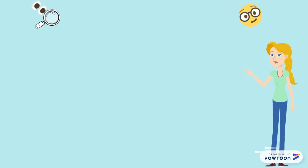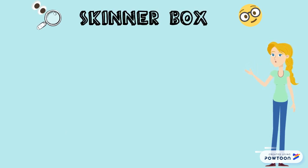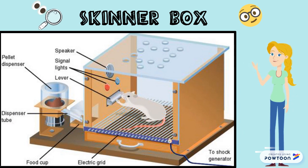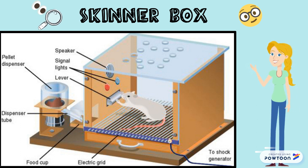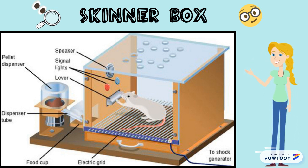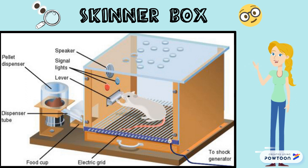BF Skinner presented operant conditioning by carrying out several experiments on animals. He used the Skinner box, created by himself, for his experiment on rats. Here we can see the rat on an electric grid used to send electric currents. Then there is the lever, which when pressed drops the food from the pellet dispenser into the food cup. It can also switch the electric current off. The lights are used as a warning and are switched on before the electric current is sent.